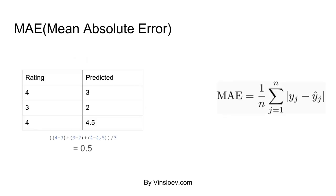Starting with the mean absolute error, we have the formula right here. We take the sum of all our ratings and predictions, subtract them to get absolute errors, then sum them together and divide by the overall number of ratings or occurrences. So for the first value, yj is 4 minus 3, then the next value is 3 minus 2, and so on. As illustrated here in a more calculation-friendly way: 4 minus 3, plus 3 minus 2, plus 4 minus 4.5, and then we take the summation of all these and divide by 3 because we have 3 set values.